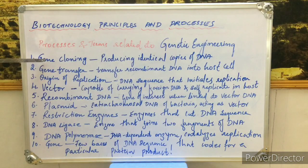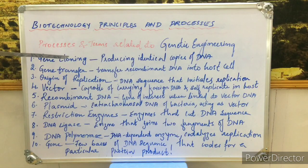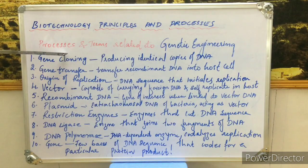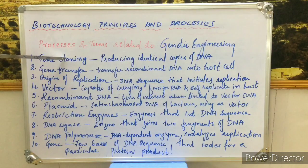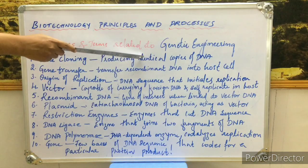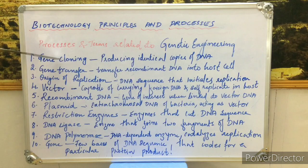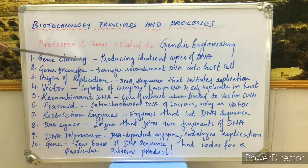Number one is gene cloning. In genetic engineering there is a process known as gene cloning. Gene cloning can be defined as the ability of an alien DNA sequence to replicate and multiply into a number of identical copies when linked to an origin of replication in a vector. Genes are nothing but DNA sequences, and gene cloning is a fundamental process in genetic engineering.